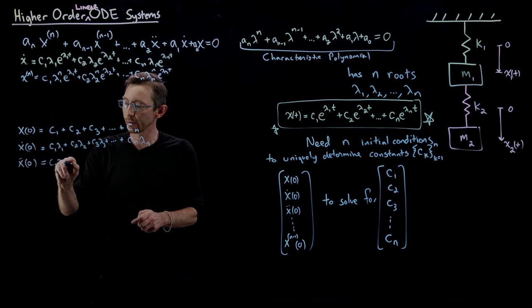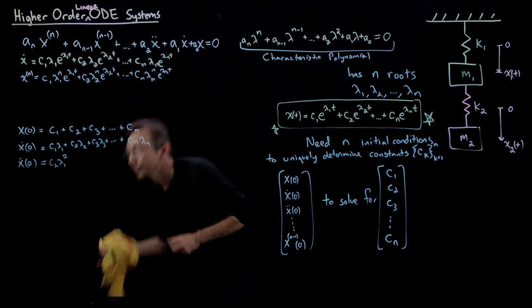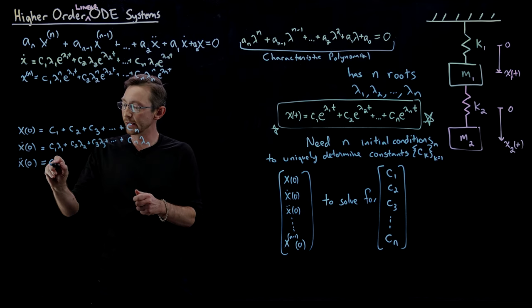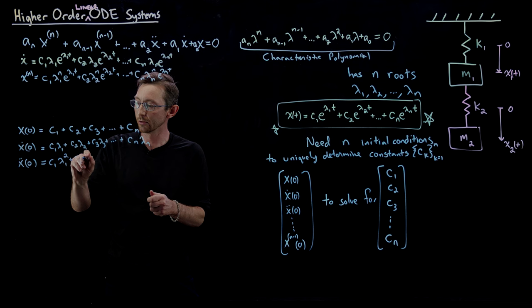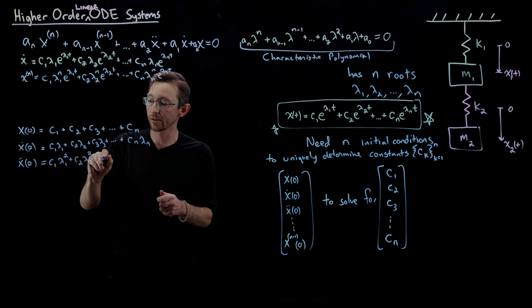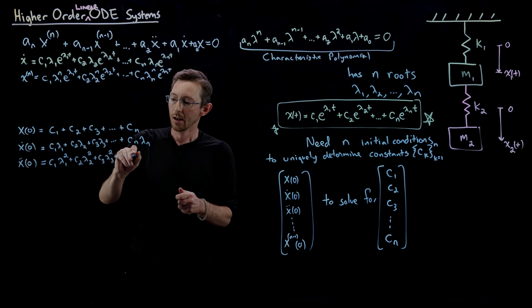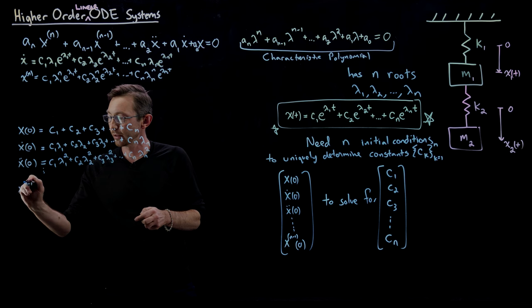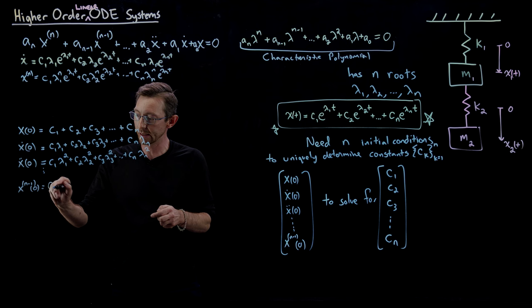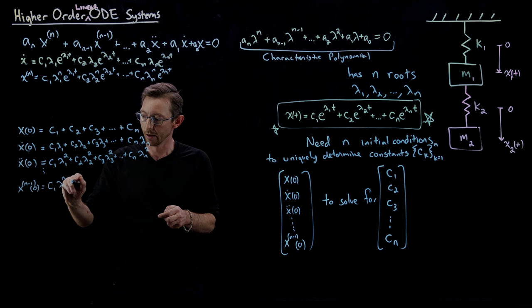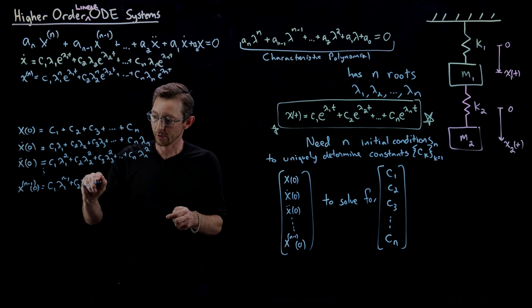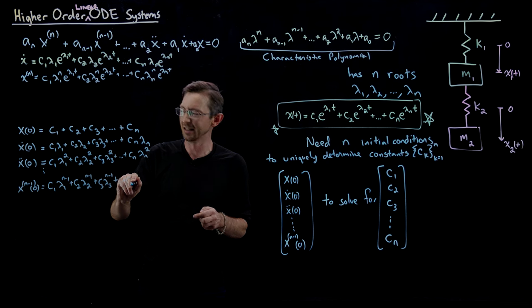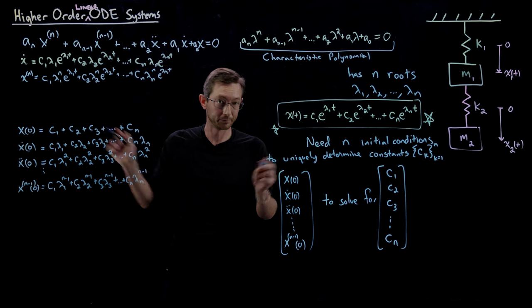And then x double-dot at zero is going to be c₁ λ₁² + c₂ λ₂² + c₃ λ₃² + ... + cₙ λₙ².